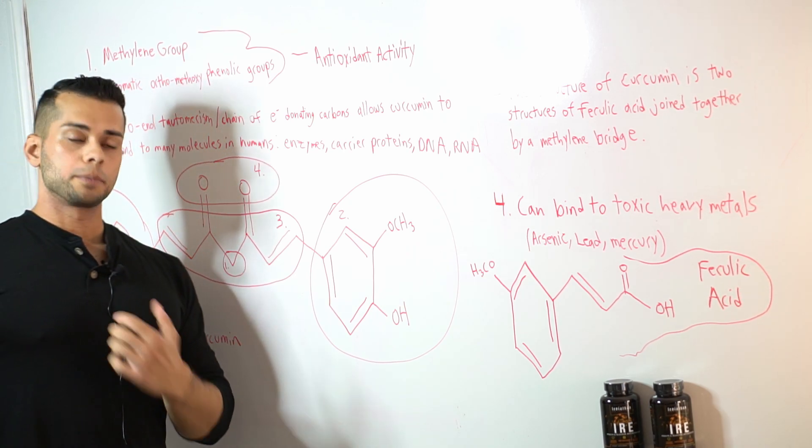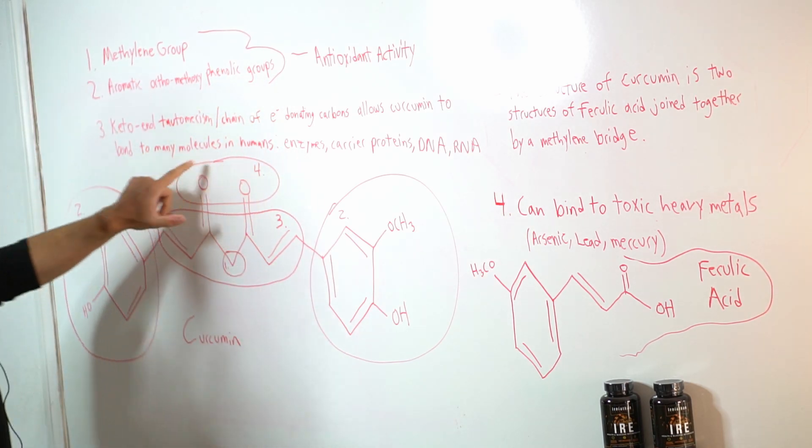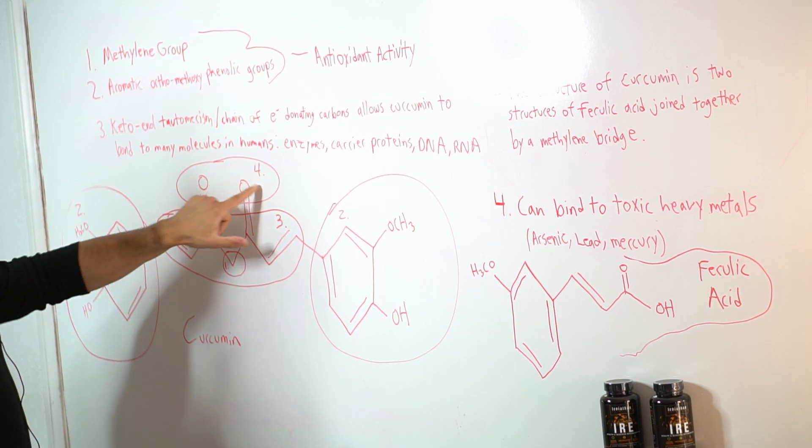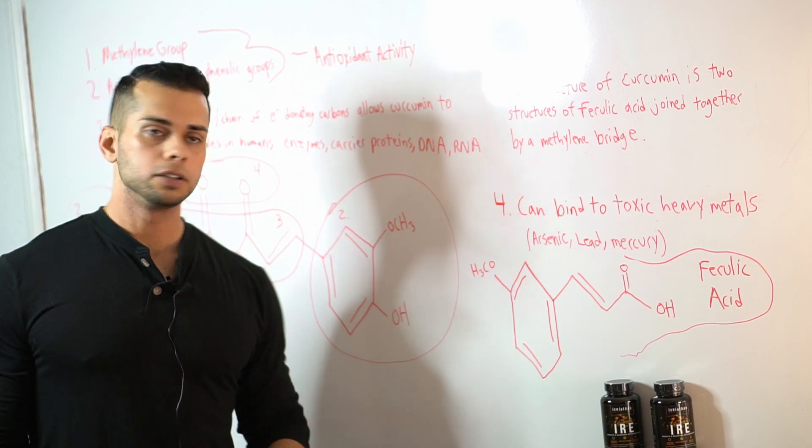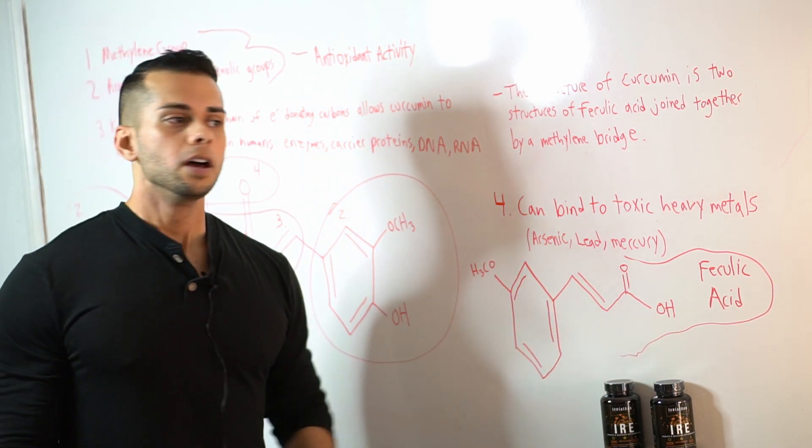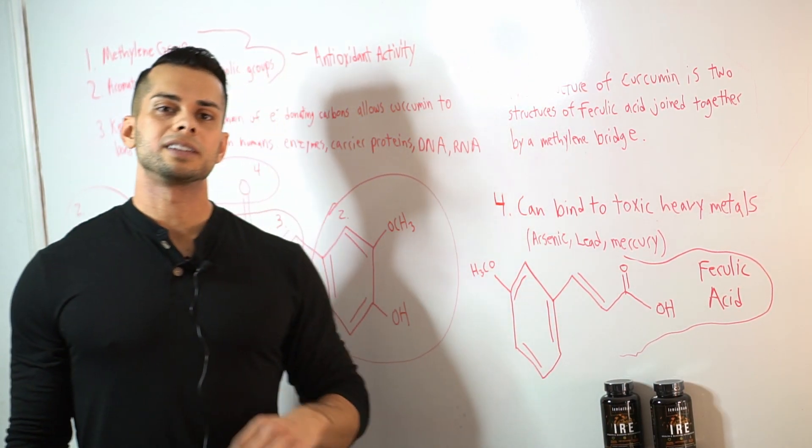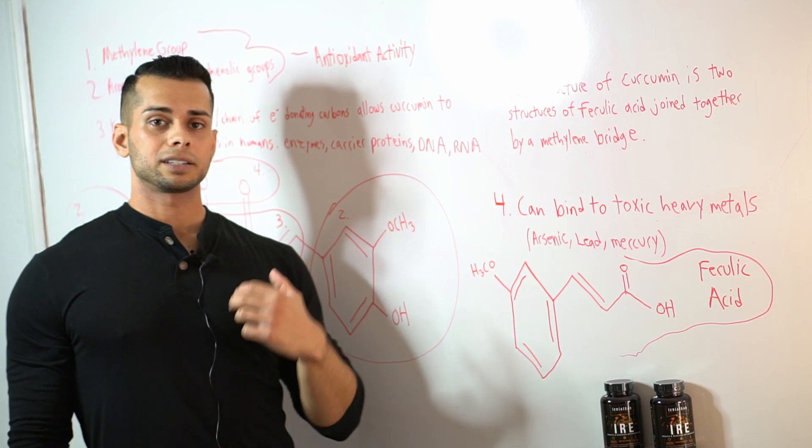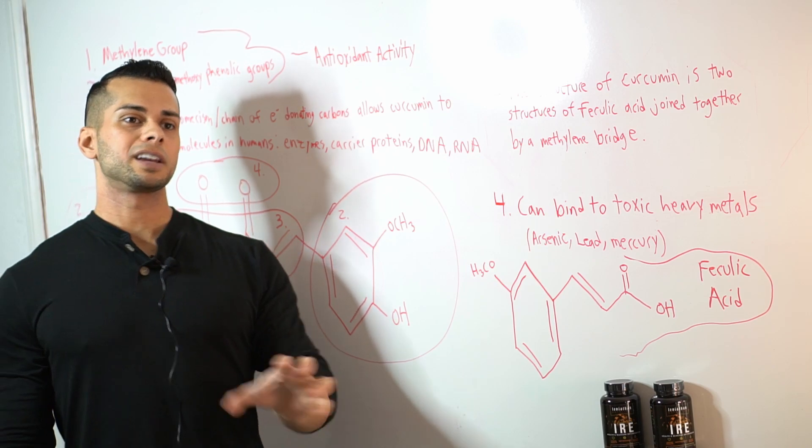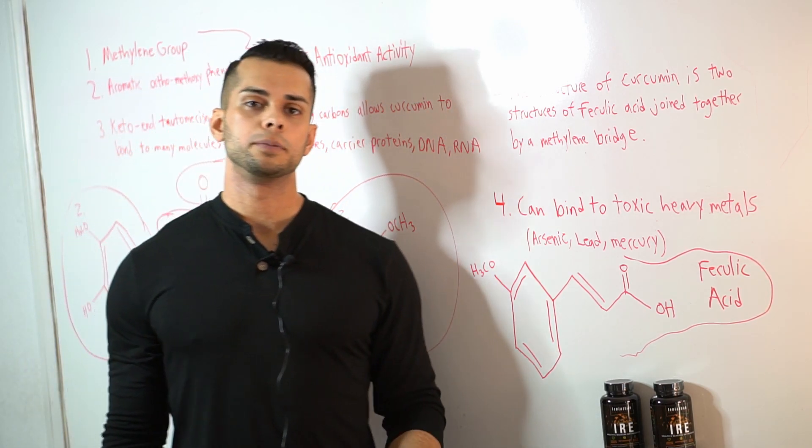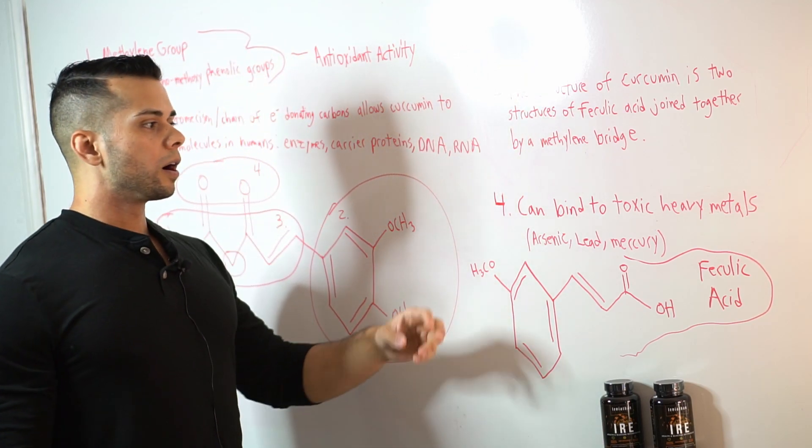Lastly another part of curcumin structure that gives us some beneficial properties are these two oxygens right here which I've labeled as number four. So number four here gives curcumin the ability to bind to toxic heavy metals in the body, those toxic heavy metals such as arsenic, lead and mercury. Curcumin is able to what's called heavy metal chelation. Curcumin binds to those heavy metals and is able to withdraw them out of the human body. So this is another reason that curcumin has these beneficial properties, removing these toxins.